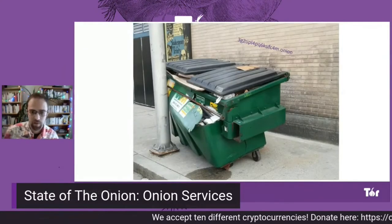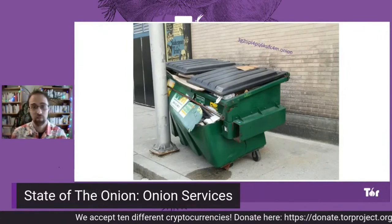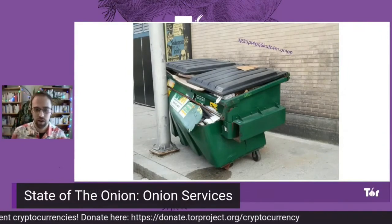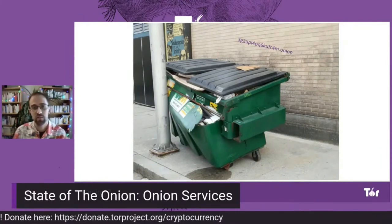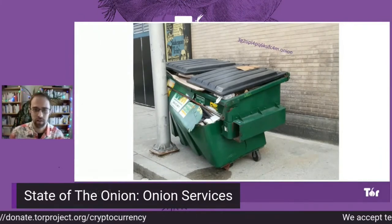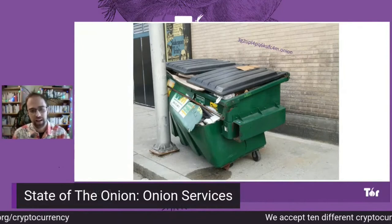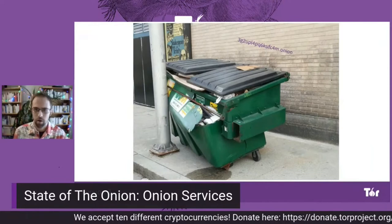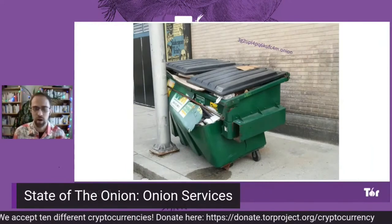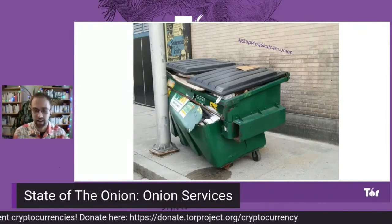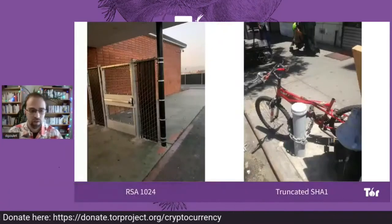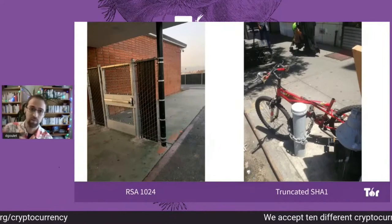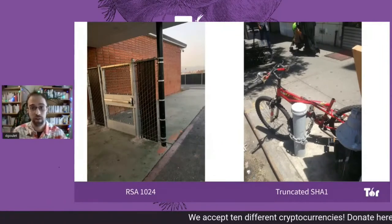The very first thing that happened: we decided to deprecate Version 2, which is the Onion Services that have the small addresses — you can see it on the wall there. It's a big problem, a big mess. It's a bit of a dumpster issue because there are many, many problems put into one dumpster, and we are getting rid of it. Those issues include cryptography.